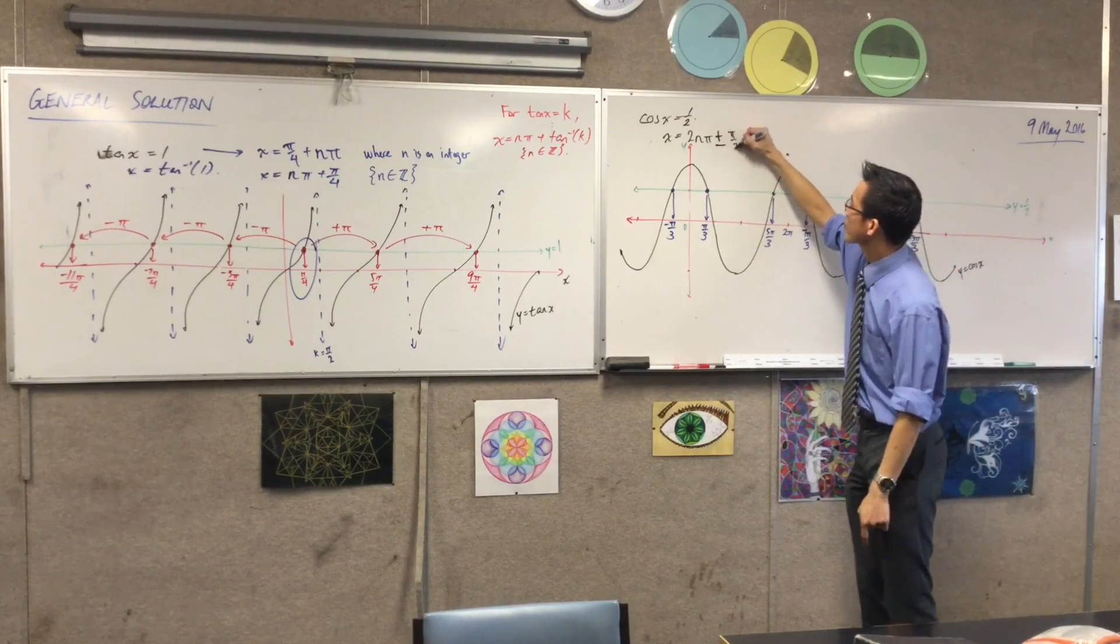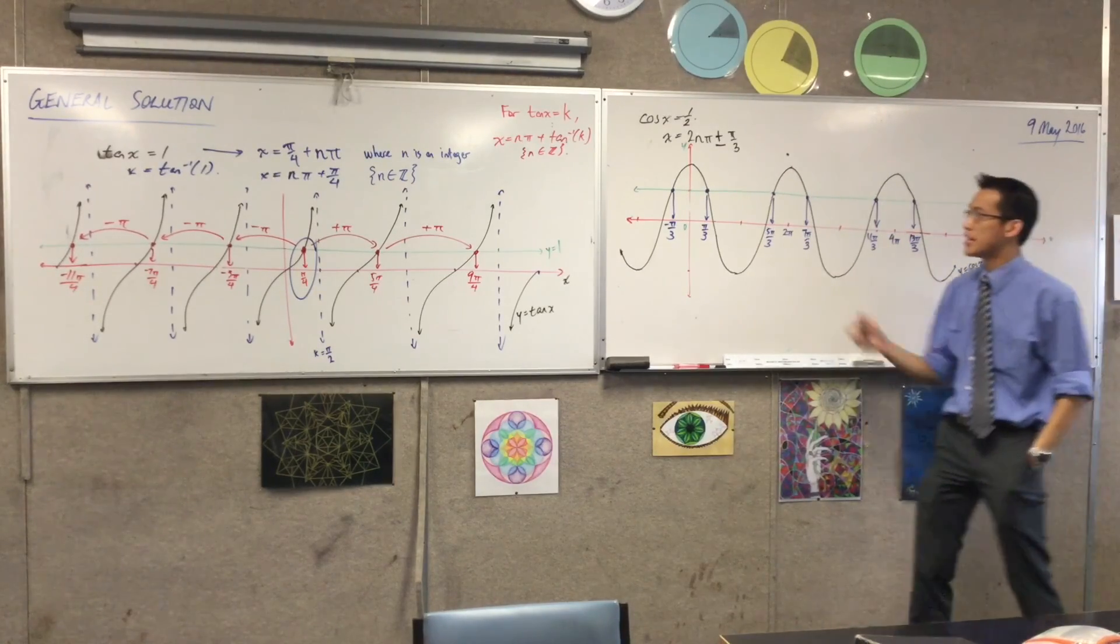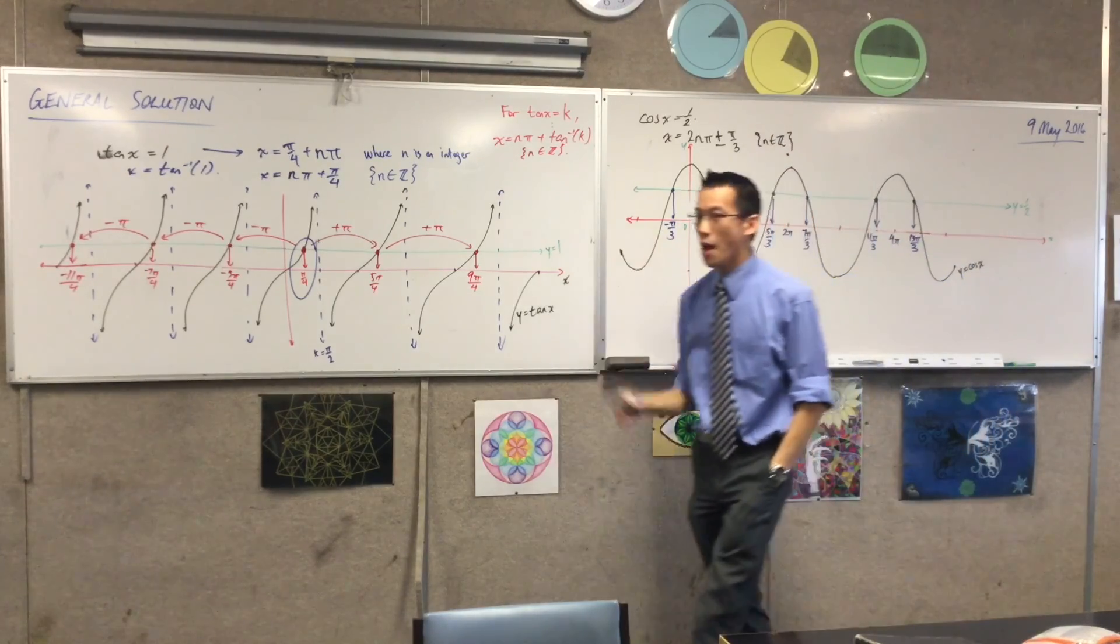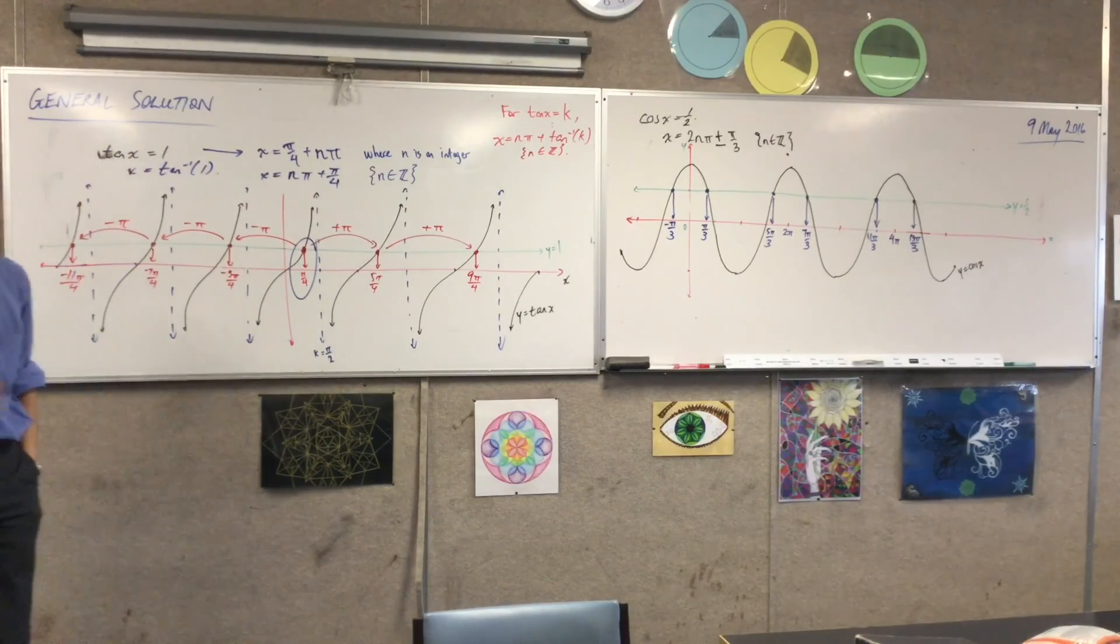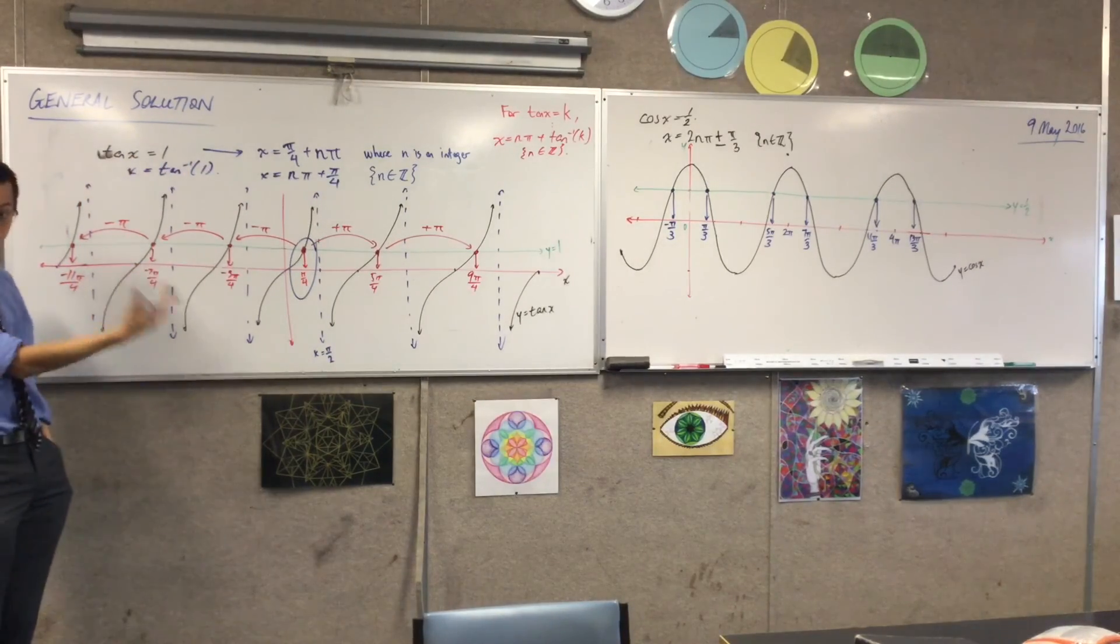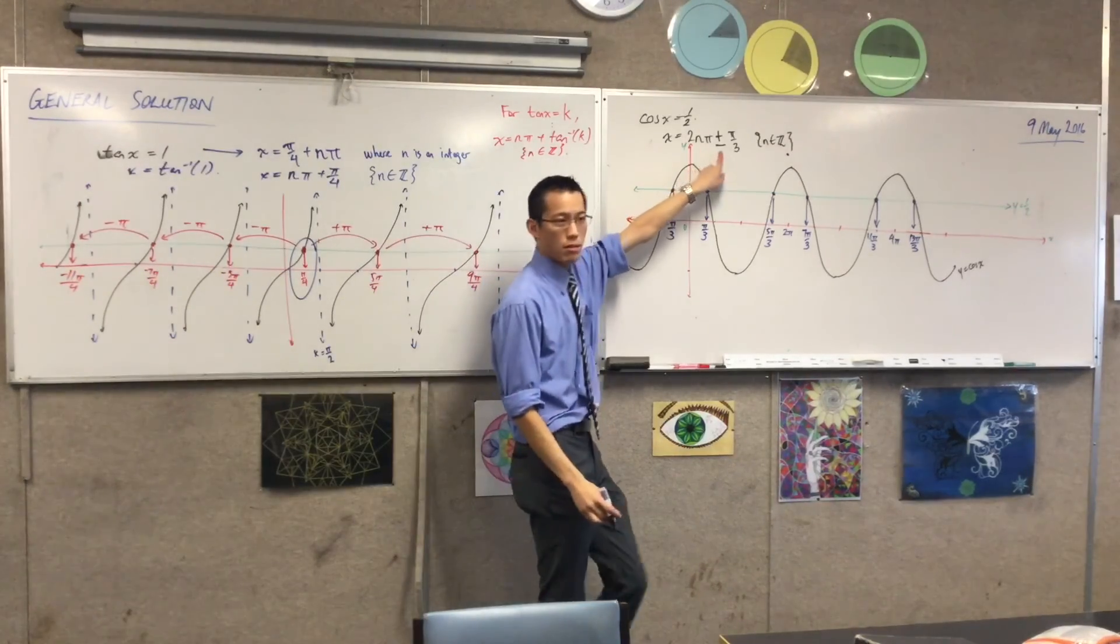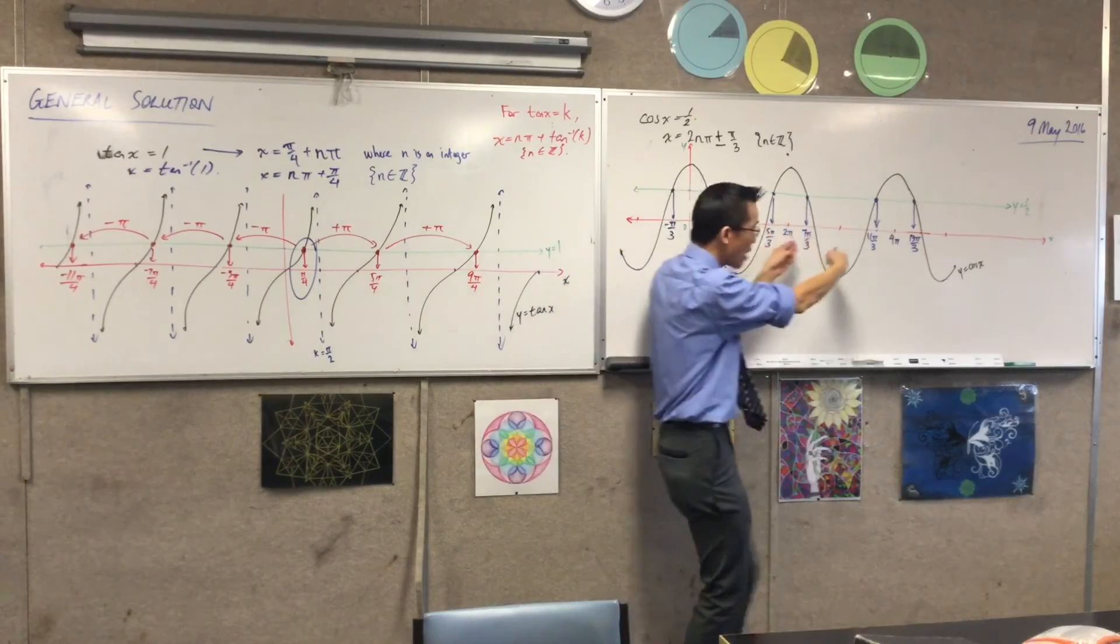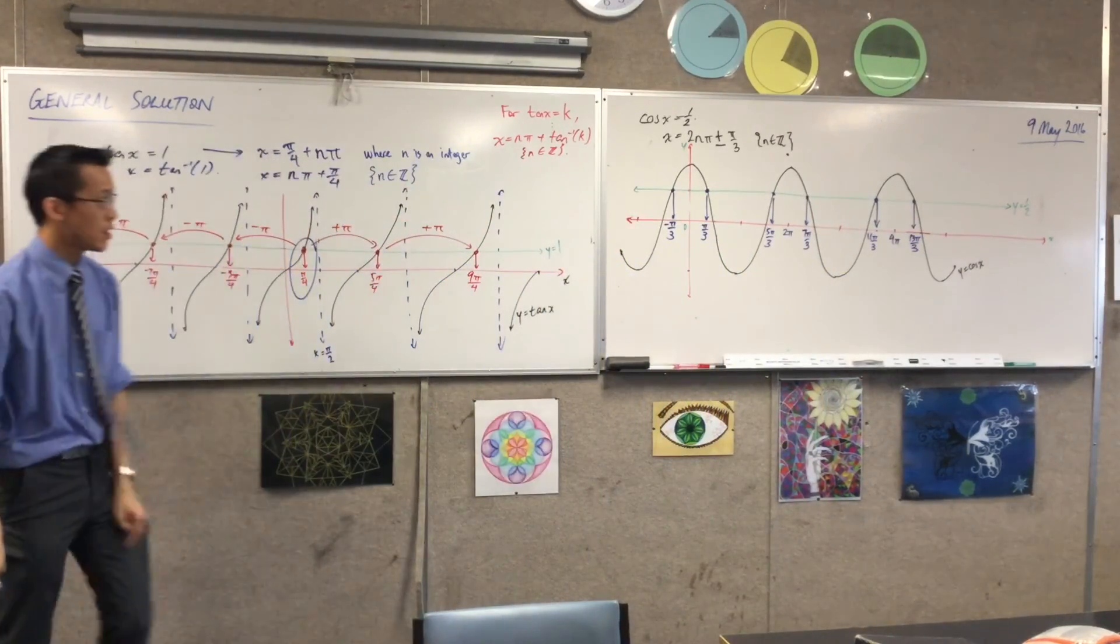So, notice what's similar and what's different. There's still this n business, I should say, n is an integer for the same reason that it was before. But it's 2nπ, not nπ, not for some arbitrary reason. It's because cosine has a different period, has a longer period. Then, what's this plus minus about? Yeah, it's because I want a pair. I want a pair every time. Whereas here, you're just getting 1, 1, 1.